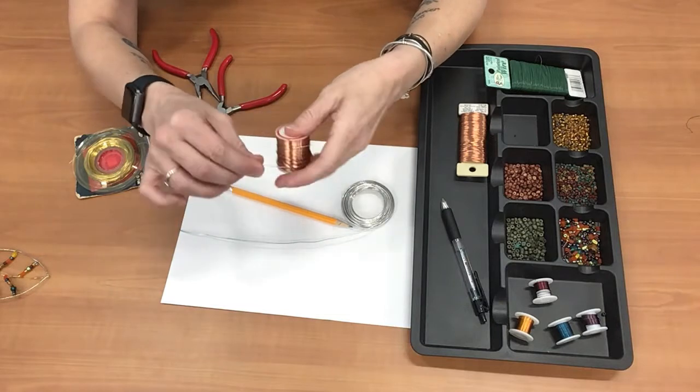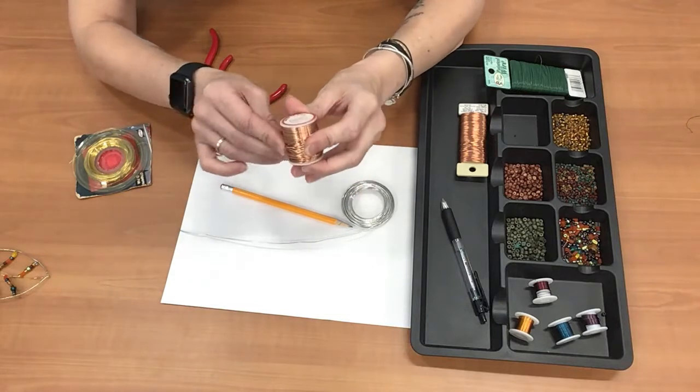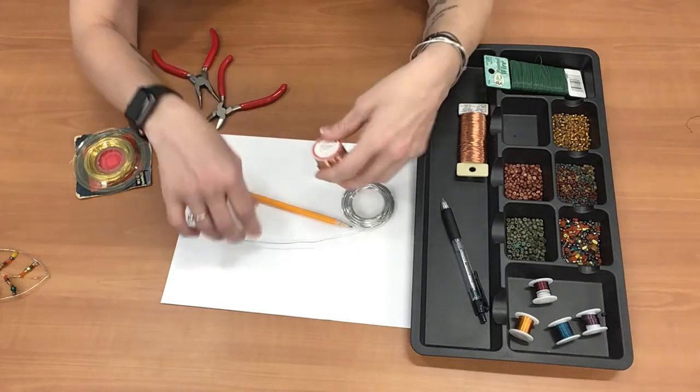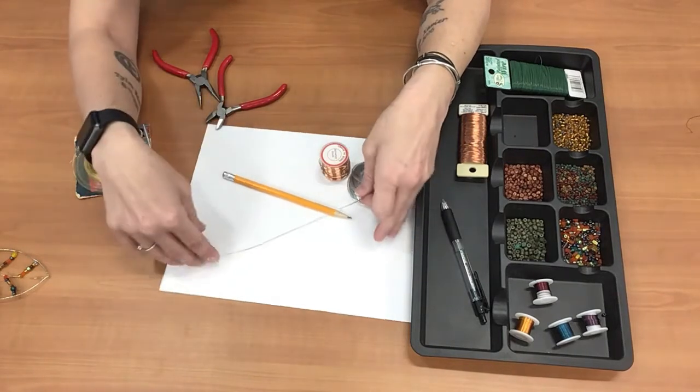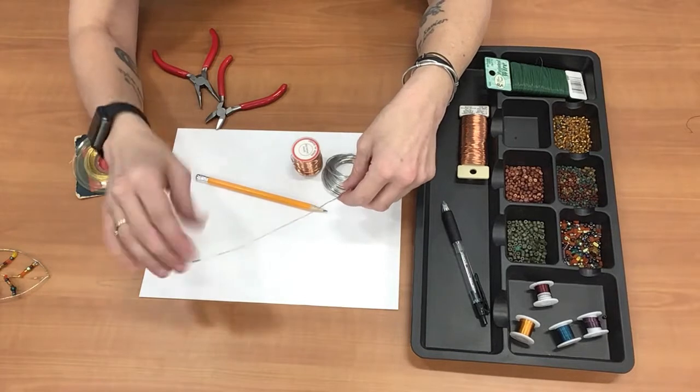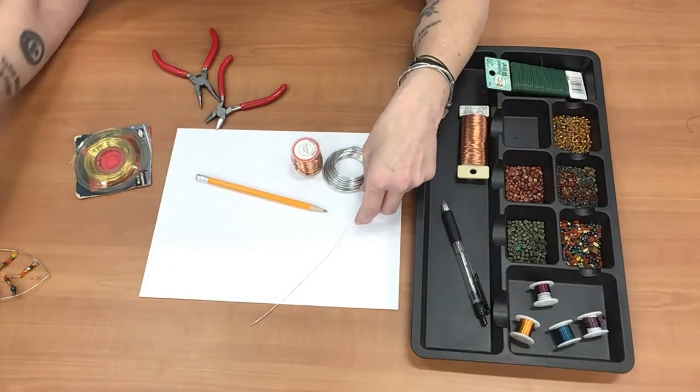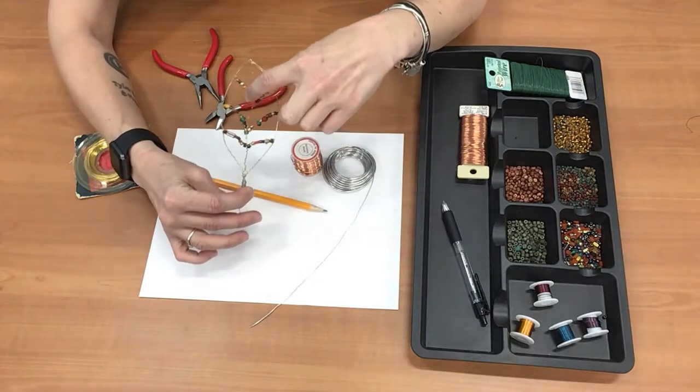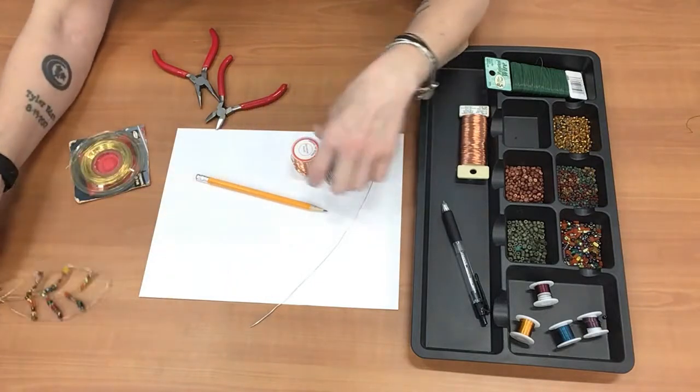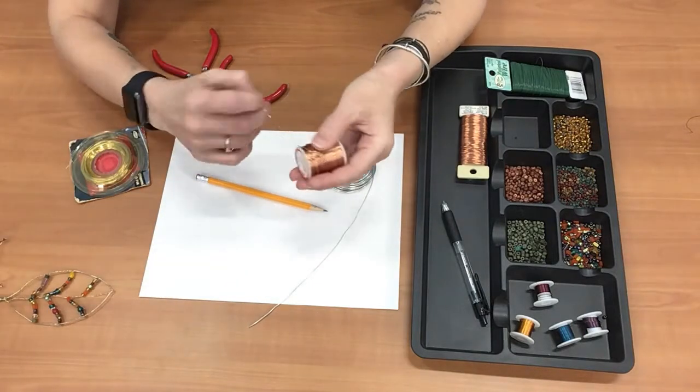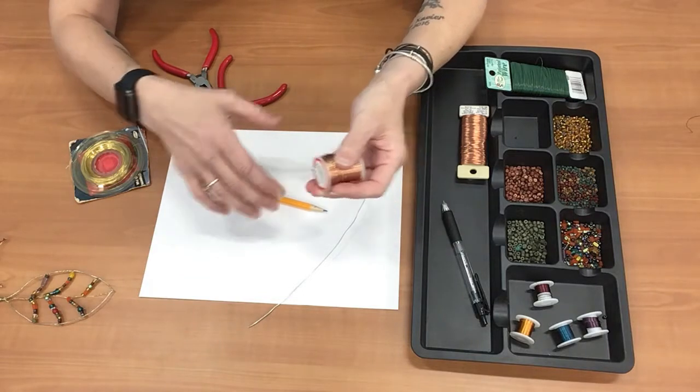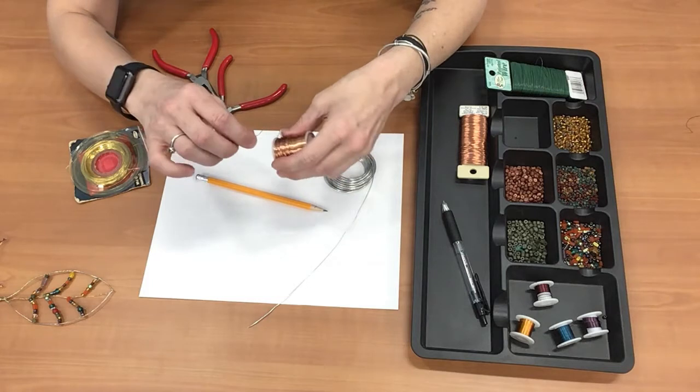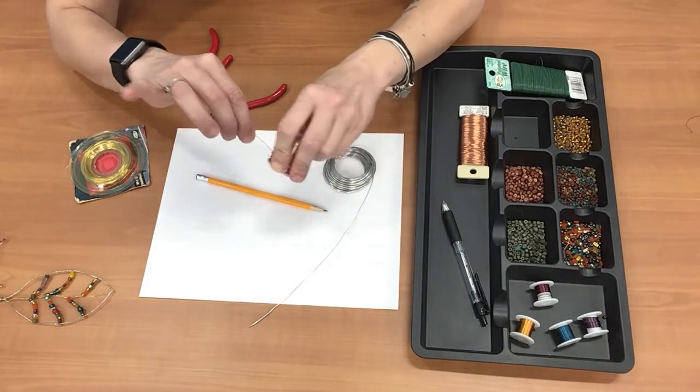The smaller the number the bigger the wire. So the 20 gauge wire is what we're going to use for the outside of the leaf and the middle main stem, this part here, and then the 24 gauge copper wire we're going to use for the veins, the veins of the leaf and where we're going to put our beads.